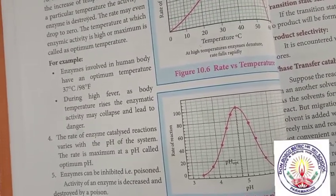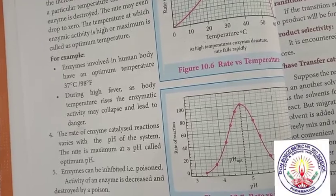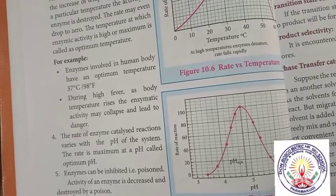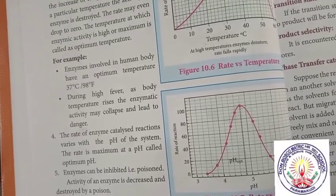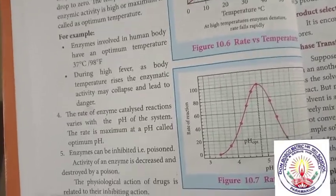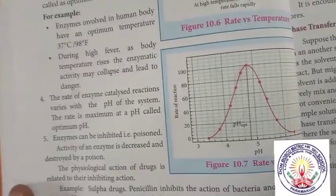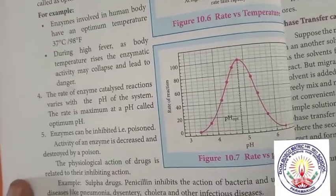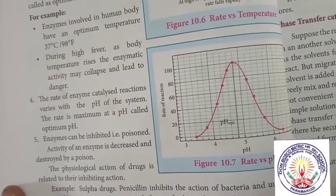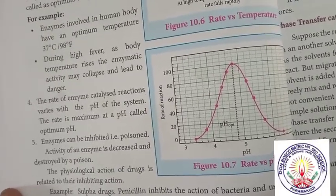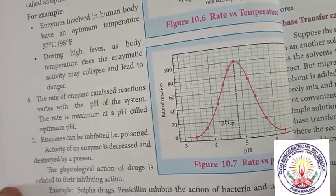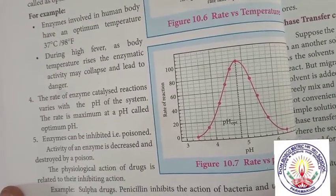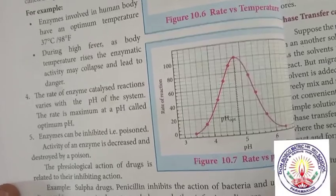The rate of enzyme catalyzed reactions varies with the pH of the system. The rate is maximum at a pH called the optimum pH.